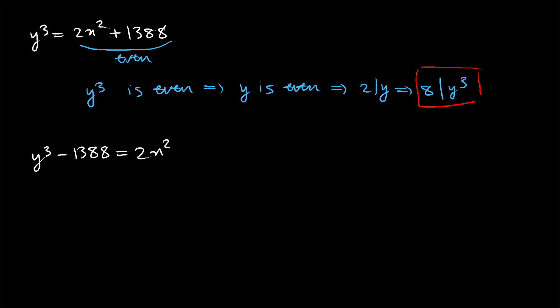Now notice that we know that 8 divides y cubed and 4 divides 8, therefore I can say that 4 divides y cubed. That's kind of obvious right? And we know that 4 divides 1388 so we can put these two together and say that 4 divides y cubed minus 1388. And if you look at our equation this is just 2x squared.